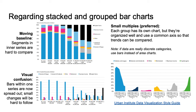Stacked bar charts can be useful, but they make it difficult to compare categories in the middle. Grouped bar charts can be confusing when bars within a series are spread out. Small multiples are an effective way to represent categorical data because they use a common axis that allows trends to be compared. Note that bar charts are really meant for data where the categories are discrete, for example, variables such as country or university that are categorical.